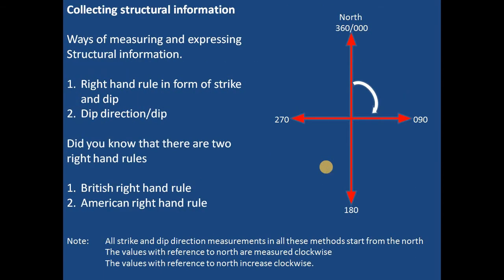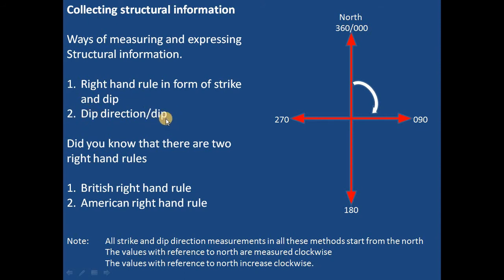Collecting structural information can be done using two ways. There's the right-hand rule whereby you will express your data in strike and dip, and the other method is using the dip direction then dip, and you will express your data in dip and dip direction.